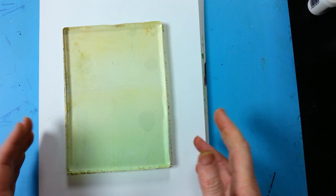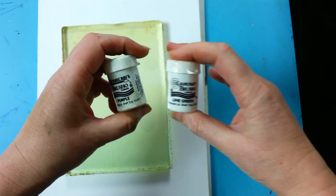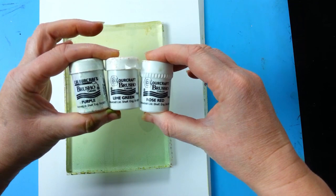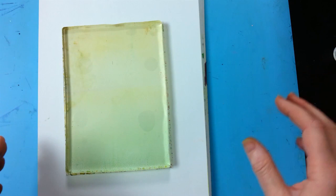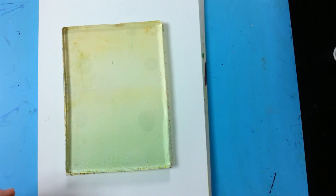So I've got lime green, purple and rose red in the Brushos. But of course have a play with the Brushos that you have got. You know just try color combinations. You'll be surprised actually what does work.